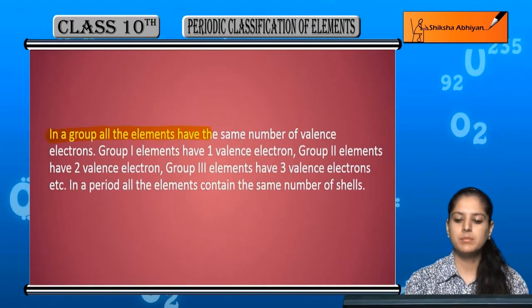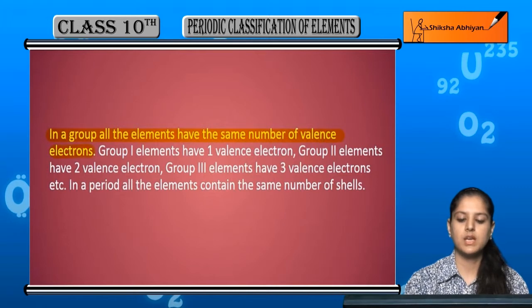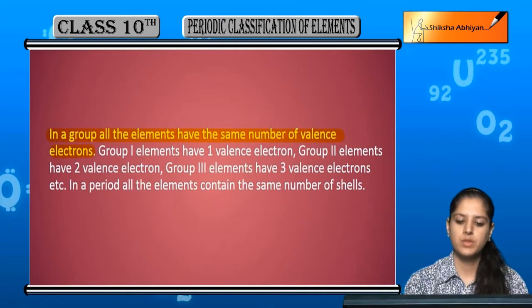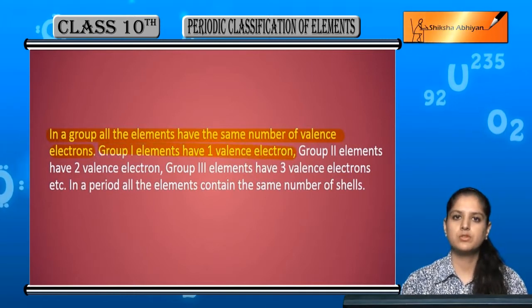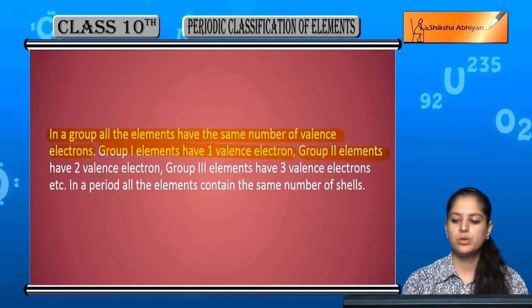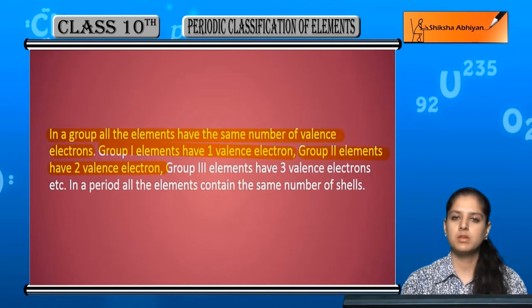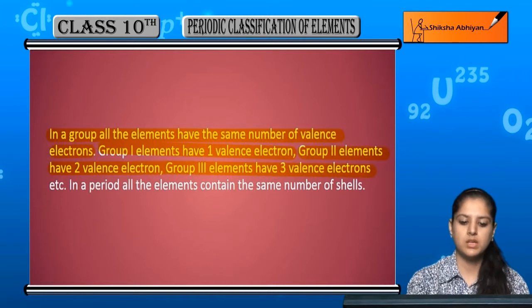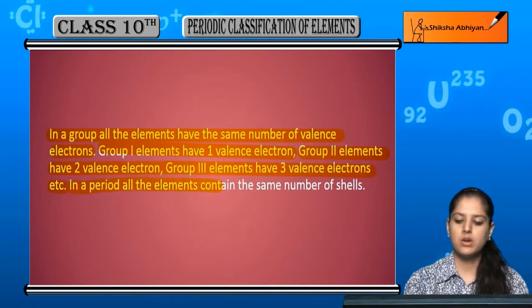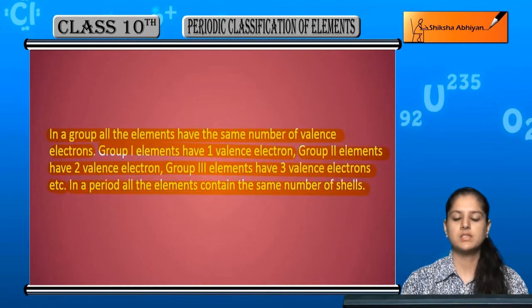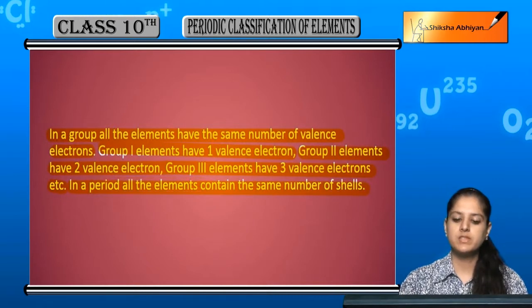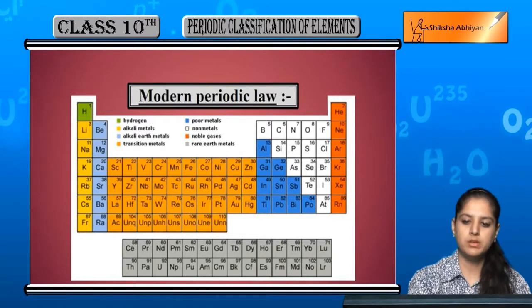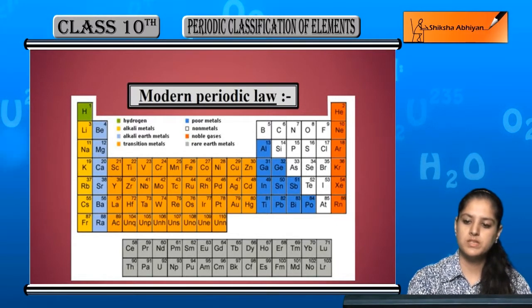In a group, all elements have the same number of valence electrons. Group 1 elements have 1 valence electron, group 2 elements have 2 valence electrons, group 3 elements have 3 valence electrons, and so on. In a period, all elements contain the same number of shells. This is the layout of a modern periodic table.